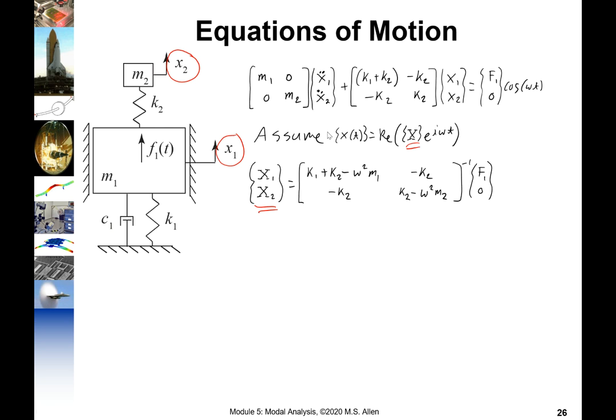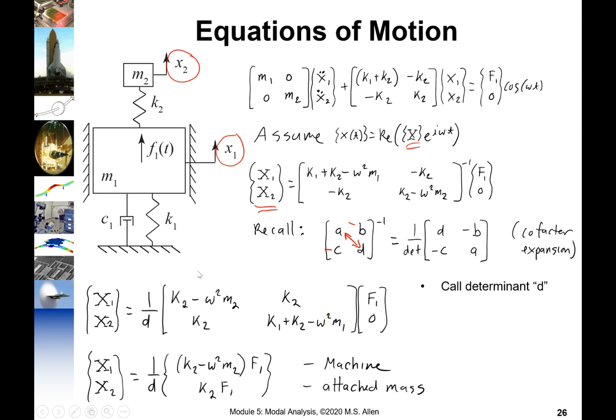If we want to solve this by hand we can use a neat little trick that says that the determinant of a matrix, a 2 by 2 matrix can be obtained by just switching the order of those two terms, putting a minus sign on the off-diagonal terms, and then dividing by the determinant. So we do that up above and what we get is that x1 and x2 is equal to this matrix times f and this 0 right here will wipe out that whole column. So that simplifies down to just this simple expression here. And remember the top is for the machine, the bottom is for this part that we bolted on.